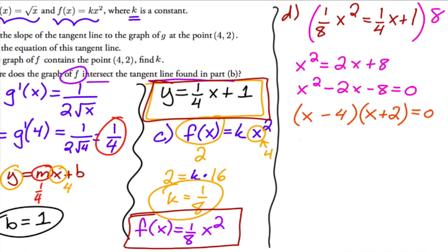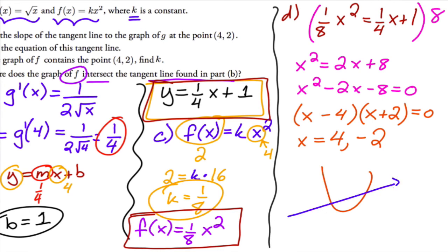Factoring: we need two numbers that multiply to negative eight and add to negative two, which are negative four and positive two. So we get (x minus 4)(x plus 2) equals zero, giving x equals four and x equals negative two. There are two intersection points, which makes sense because a parabola and a line will typically intersect twice.